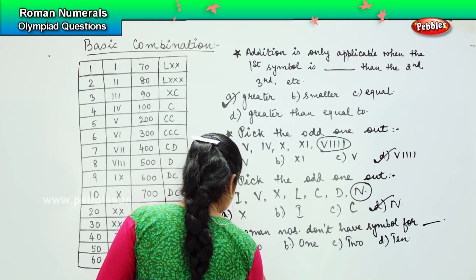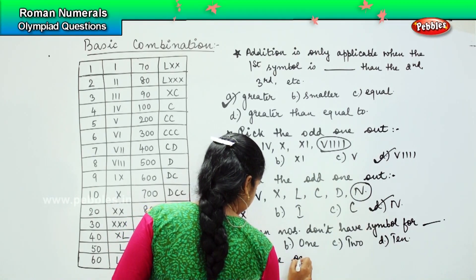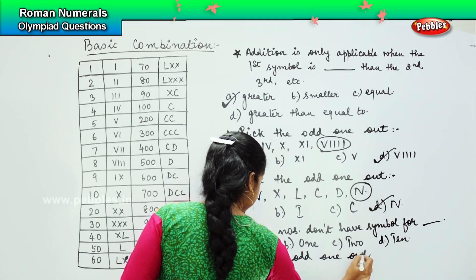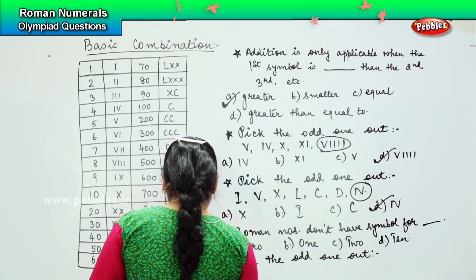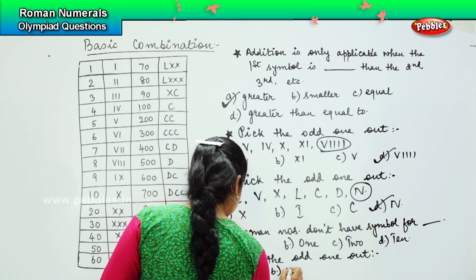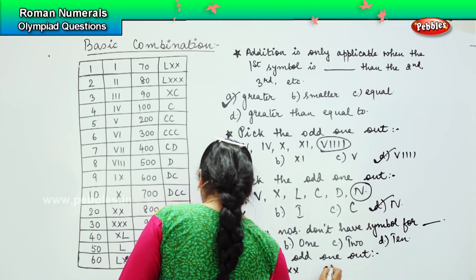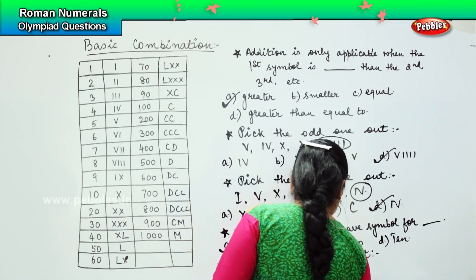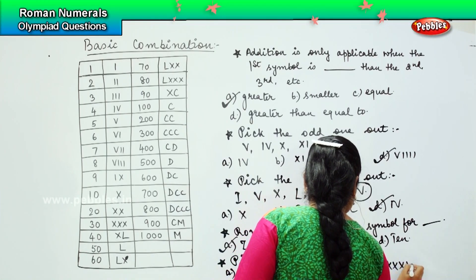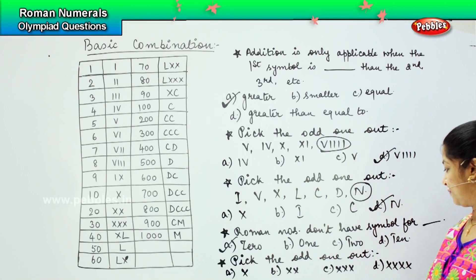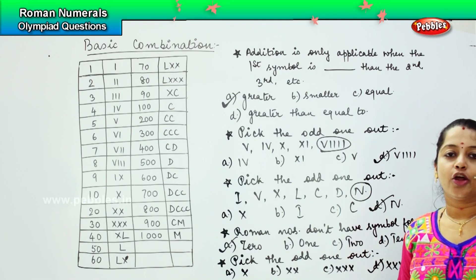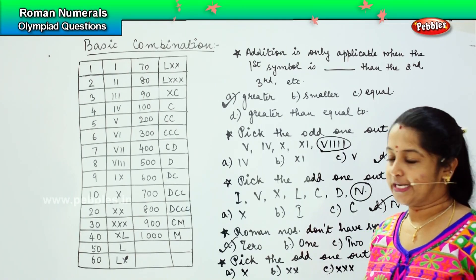Pick the odd one out. The options are: A - X, B - XX, C - XXX, D - XXXX. Which is the odd one out? It is D, because any alphabet cannot be repeated more than three times. Very good!